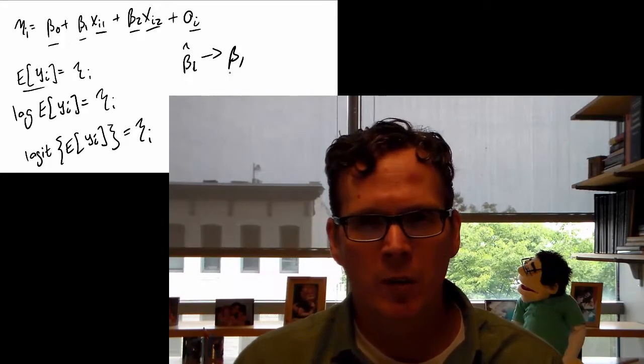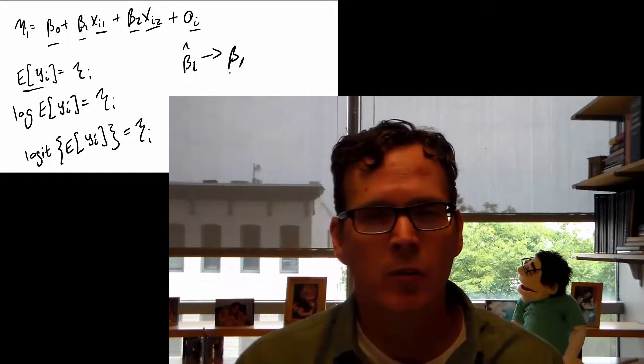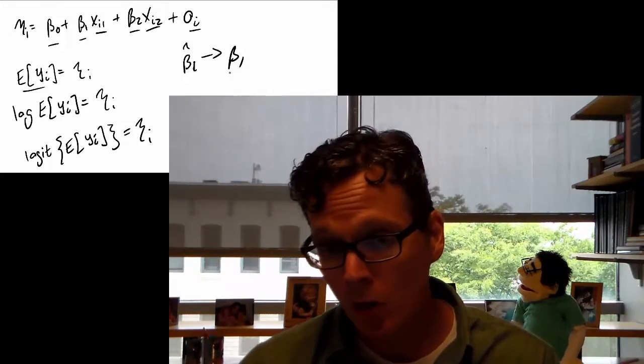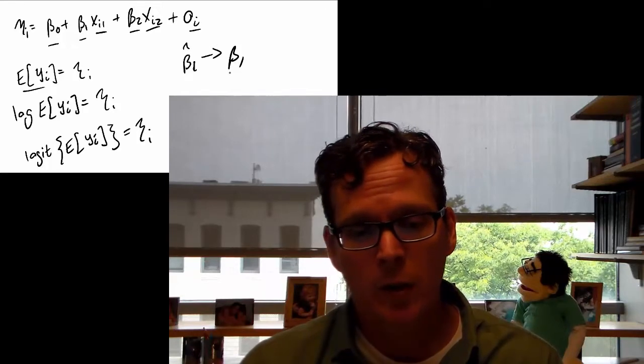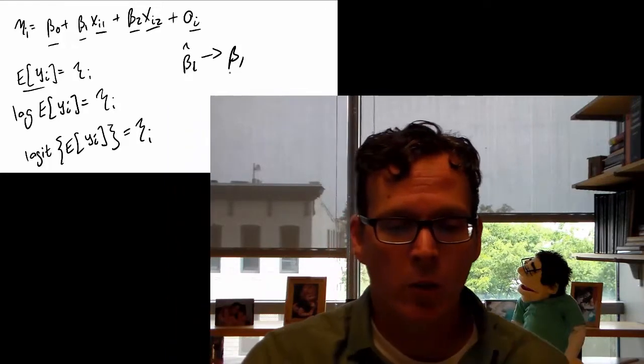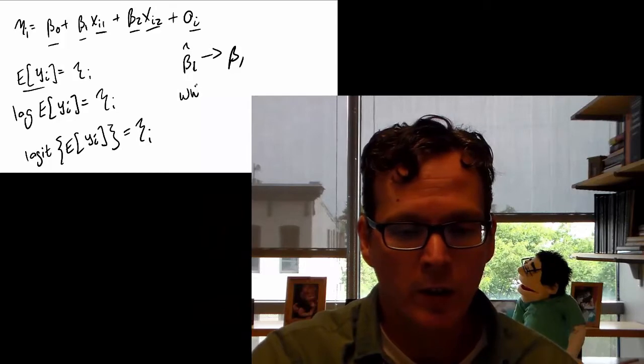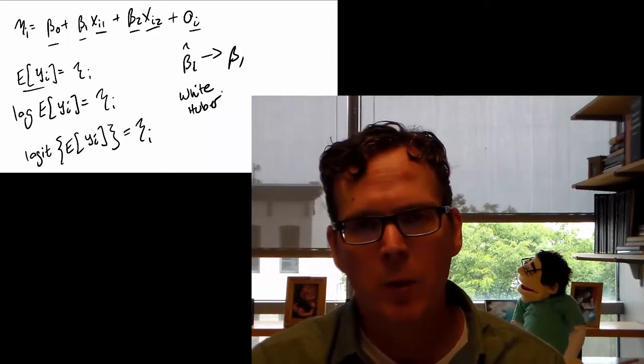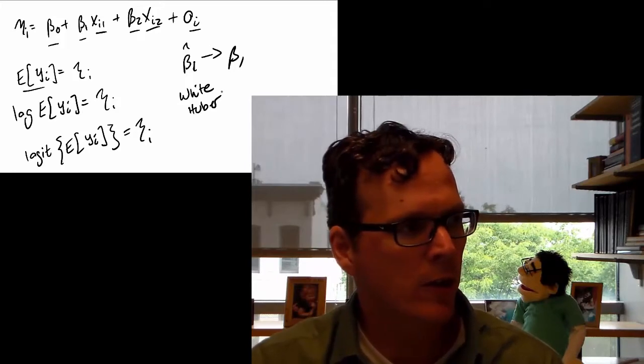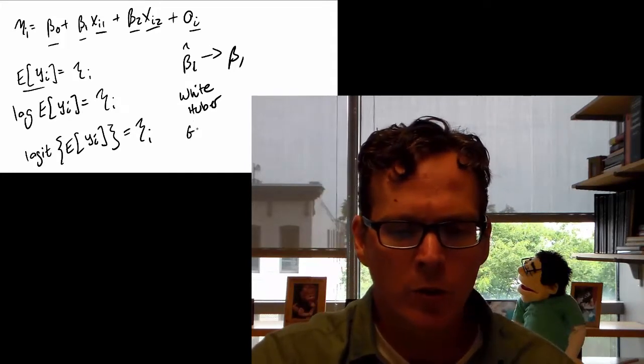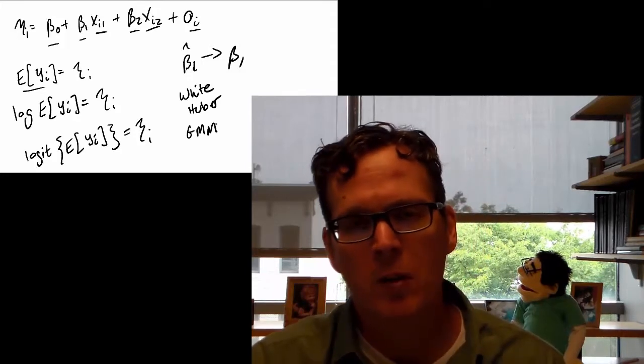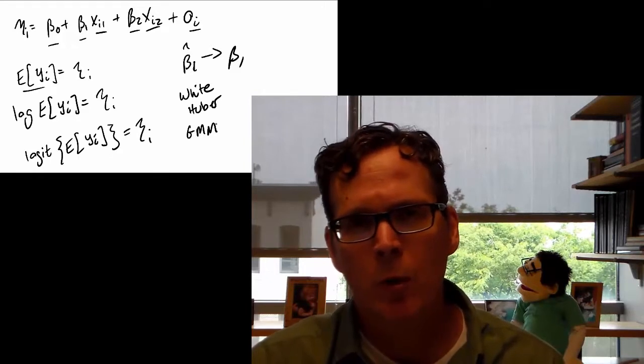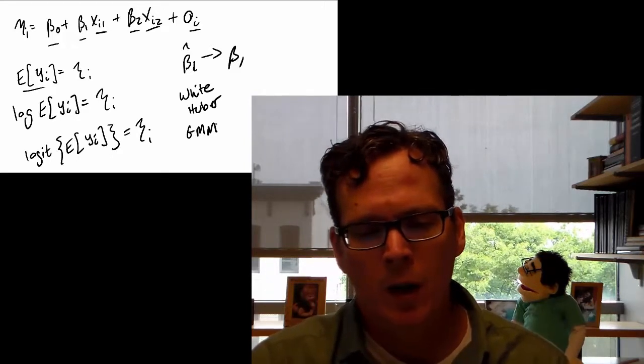However, we don't just want something that's consistent, we don't just want something that converges. We want it to actually have some inference like a confidence interval or hypothesis test. So to do that, there's been a series of work starting with White and Huber. White's papers were very influential. They were in the econometrics literature. There's a related literature that came out later called the generalized method of moments. That's Lars Peter Hansen, if I'm recalling correctly. I think he won a Nobel Prize for that.